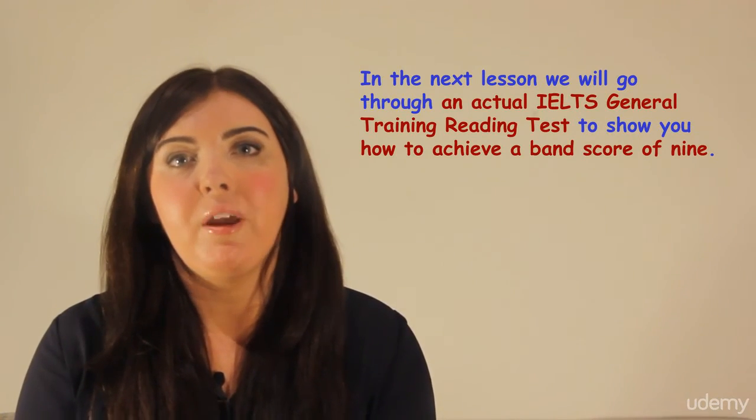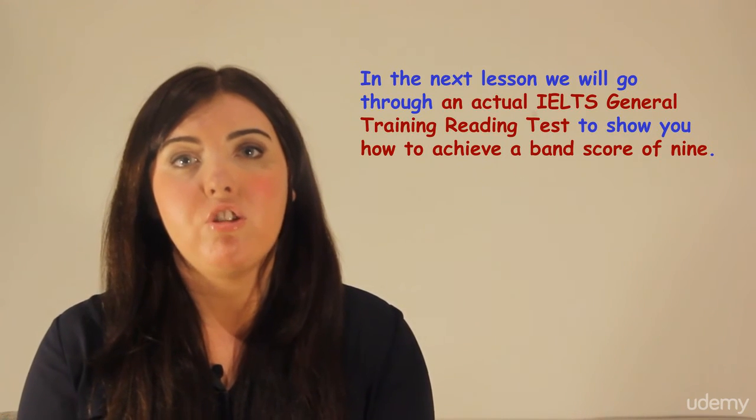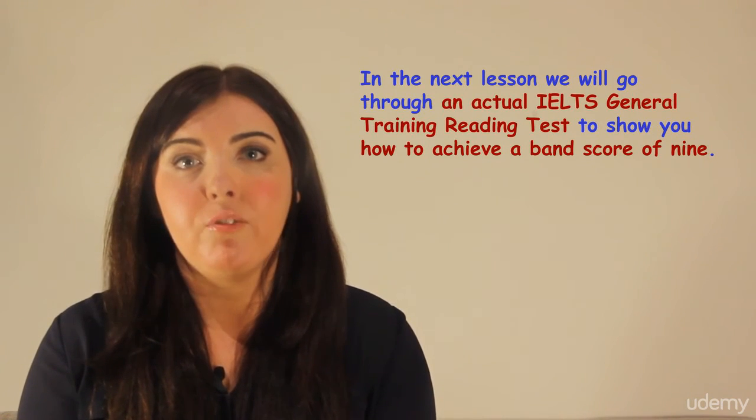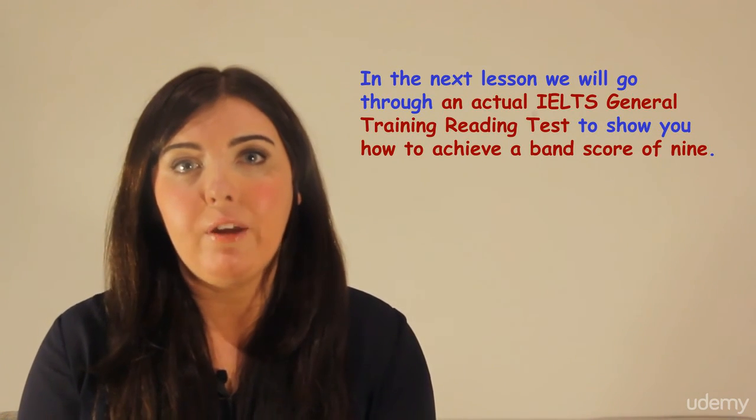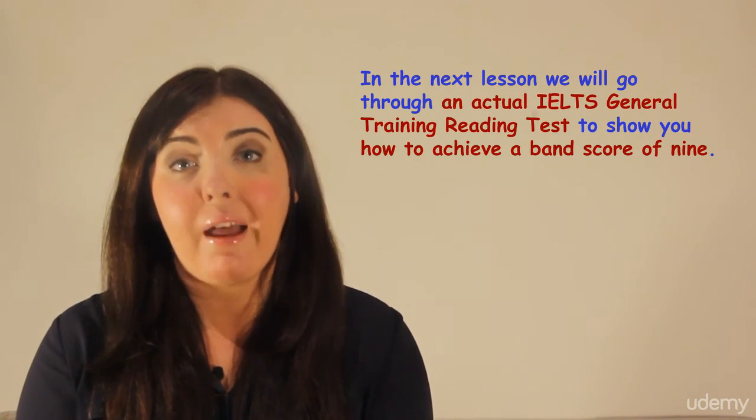In the next lesson we will go through in depth an actual IELTS General Training reading test to show you how to achieve a band score of nine. It is important to remember that there are so many different types of questions that can be asked on the reading test of the IELTS exam, and the only way to improve and get a better score is to practice, practice, practice. See you in the next lesson.